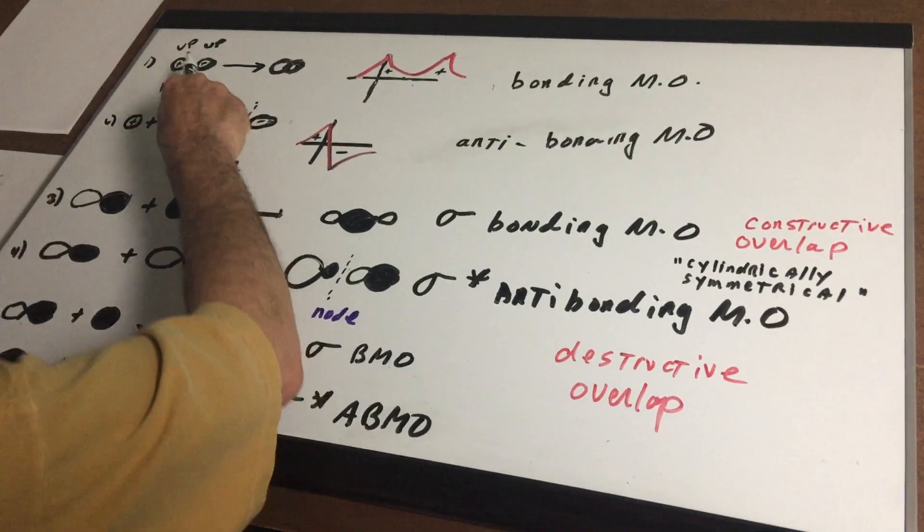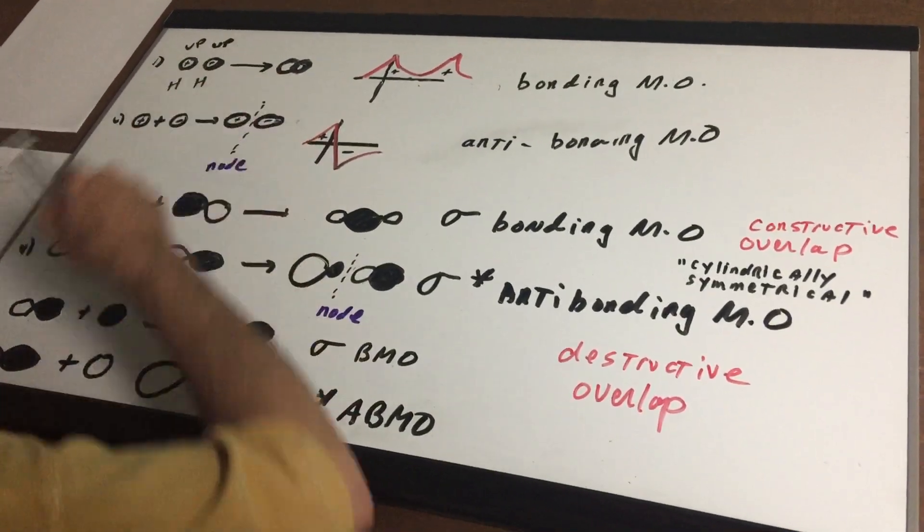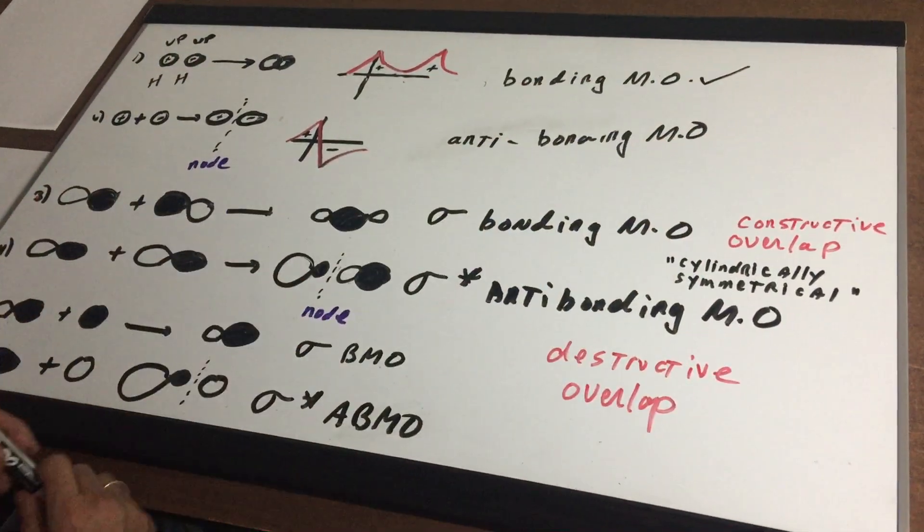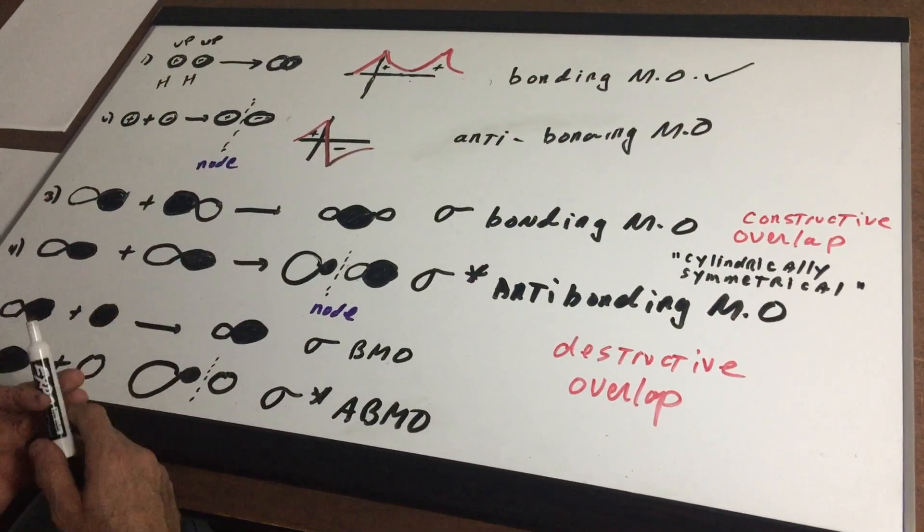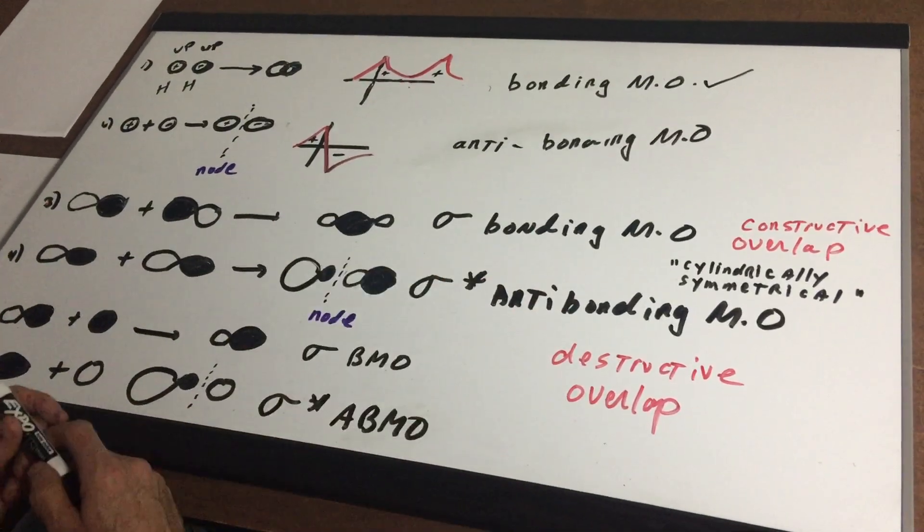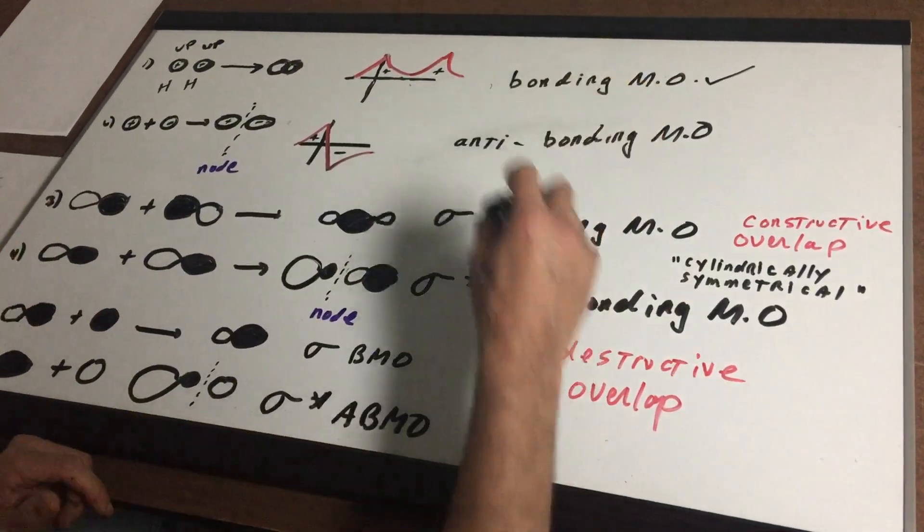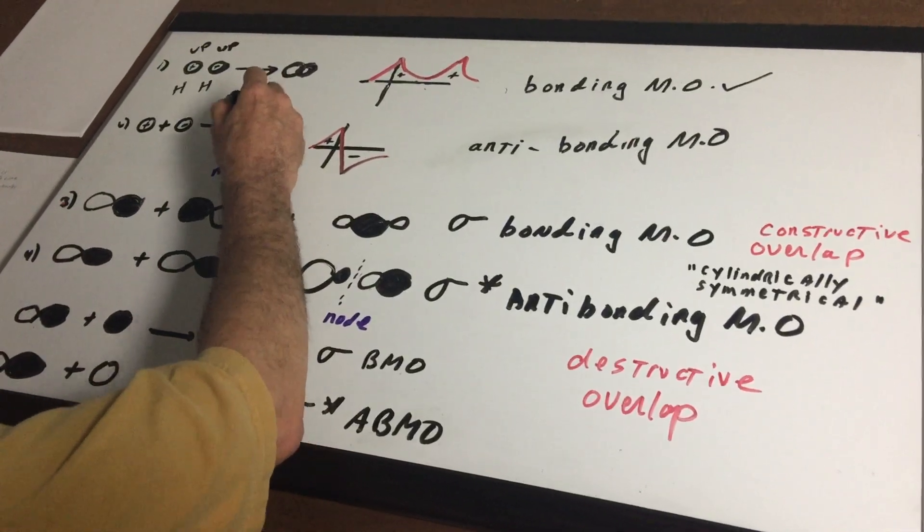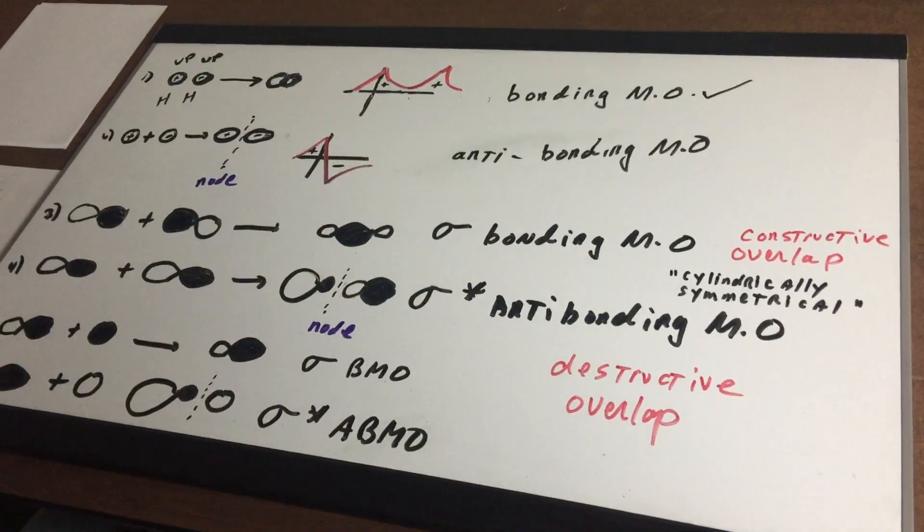When the waves combine and the orbitals combine we call this a bonding molecular orbital. If they don't combine we call this an anti-bonding molecular orbital. And this area right here where there's no probability to find an electron is called a node.